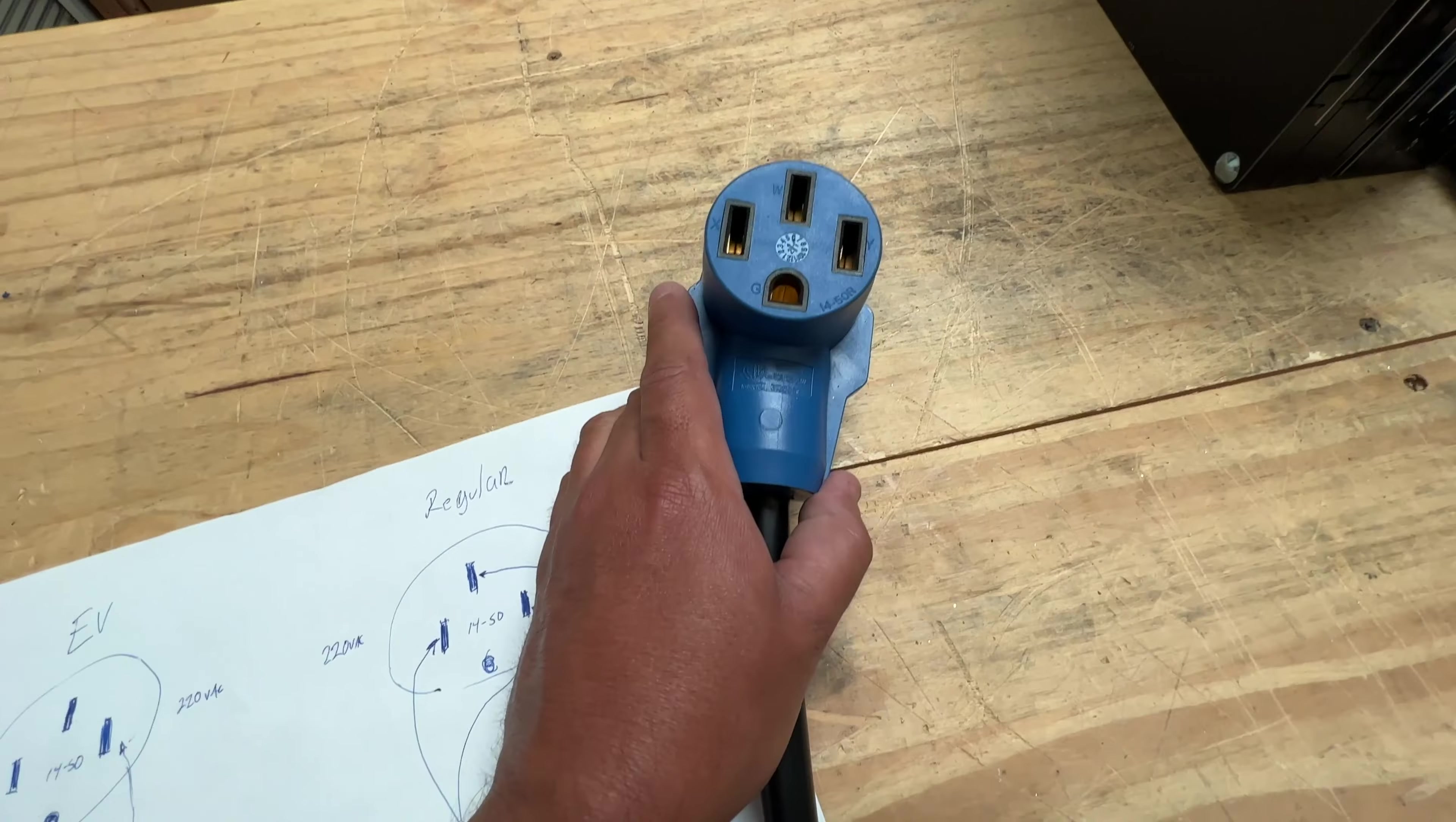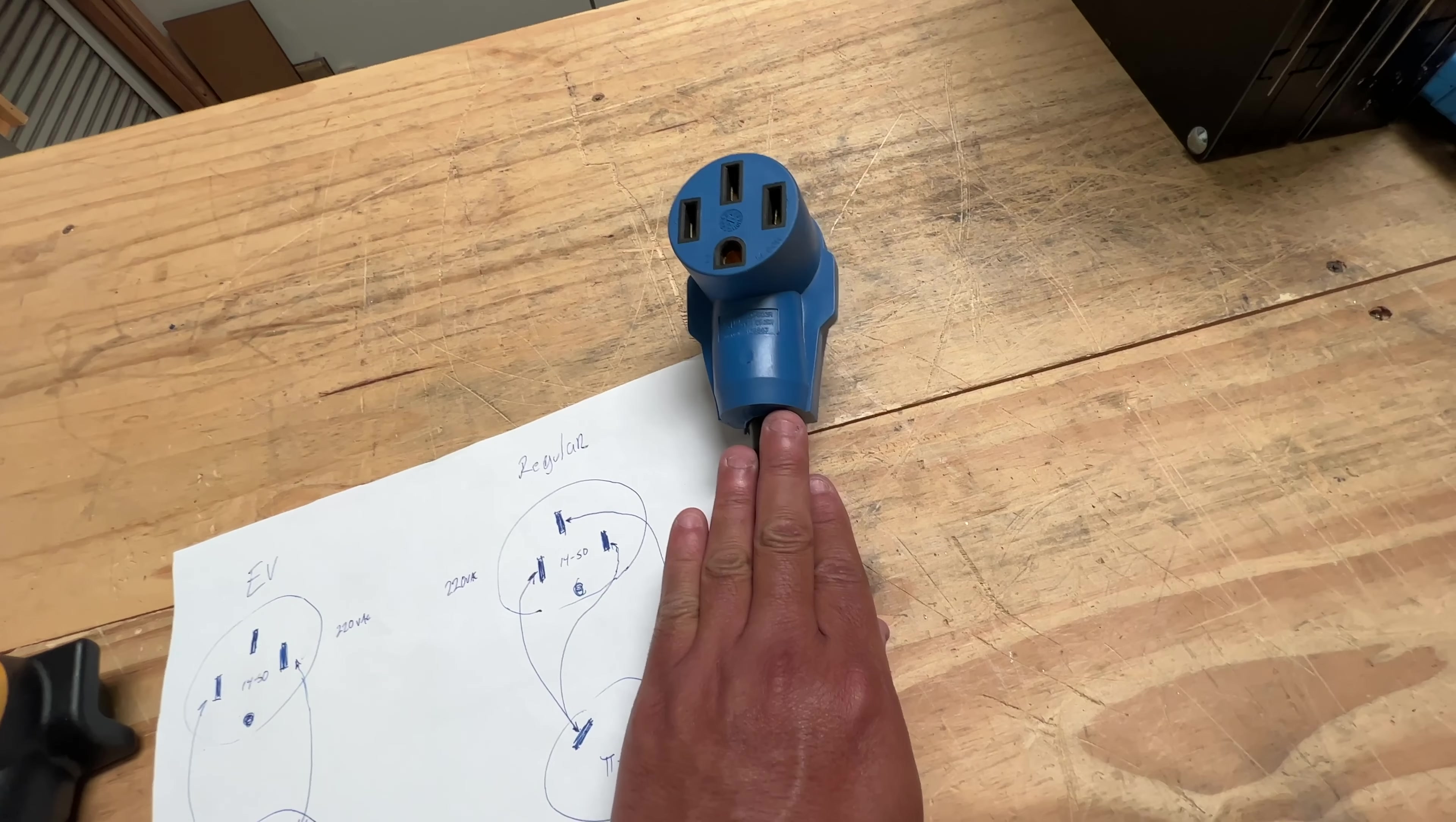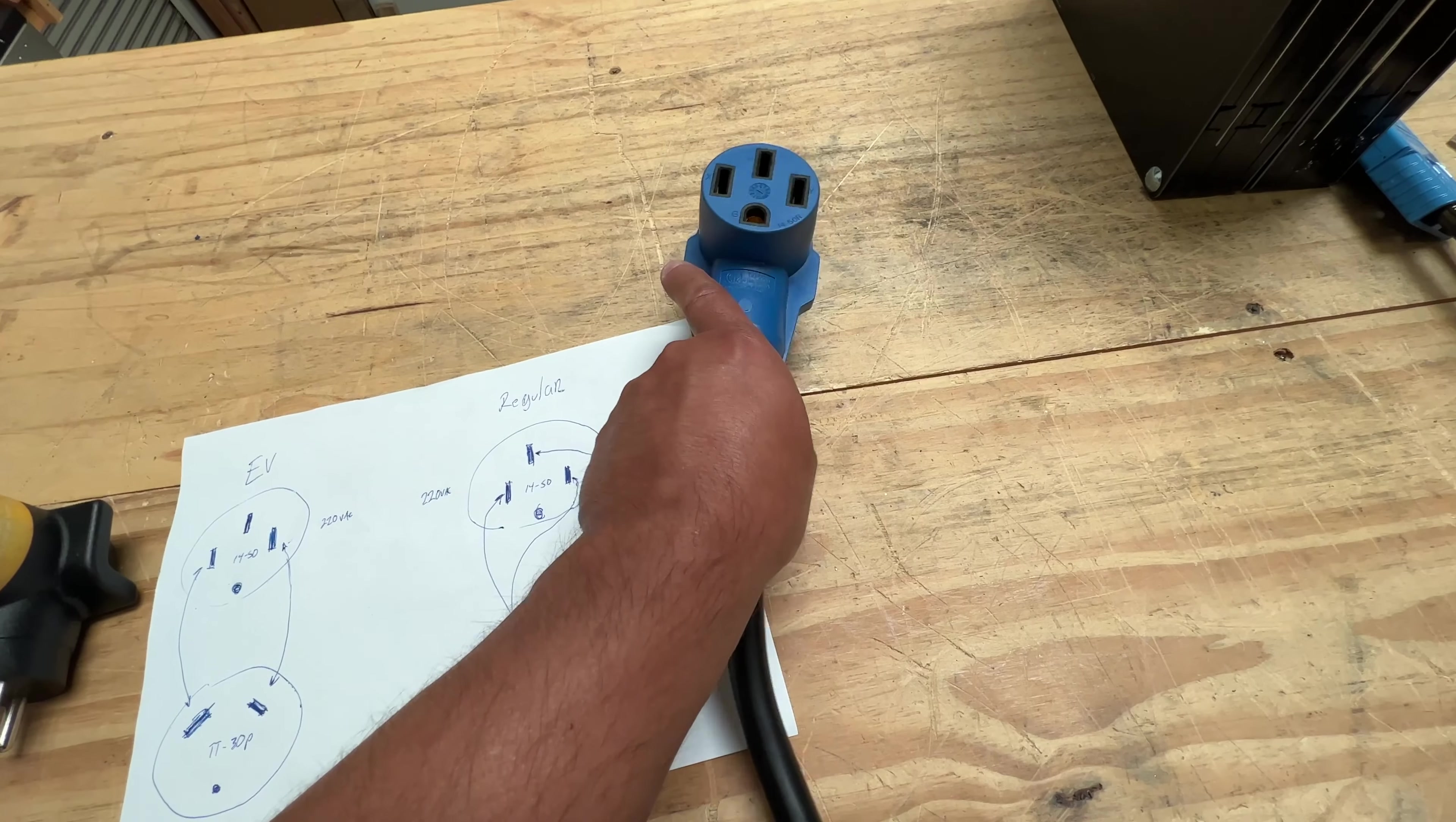If you're using the NEMA 14-50 to power 120 volt circuits, like in an RV for example, this would work. Except that you only have half the capacity of the full 220 phase—it's only 30 amps. So 30 amps will be divided into those two, and you only have 15 amps per circuit here.